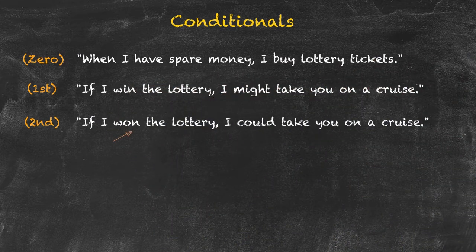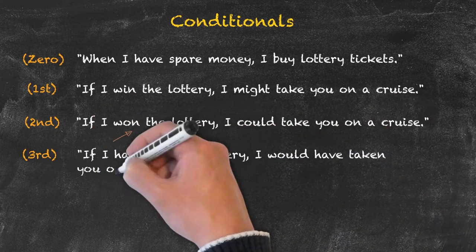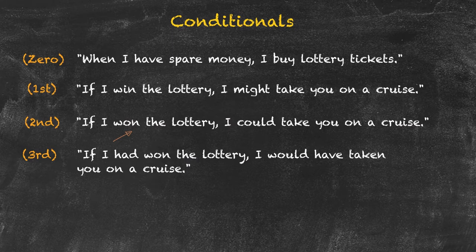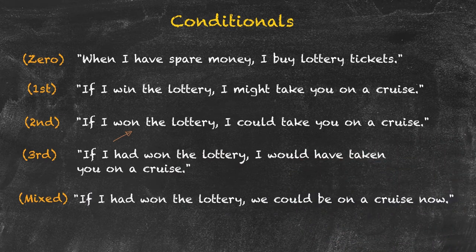'If I won the lottery, I could take you on a cruise.' This use of past simple here is indicating a reduced degree of certainty over the first conditional. 'If I had won the lottery, I would have taken you on a cruise' as the past result of an imaginary situation in the past. 'If I had won the lottery, we could be on a cruise now.' That's the present situation of an imaginary situation in the past.